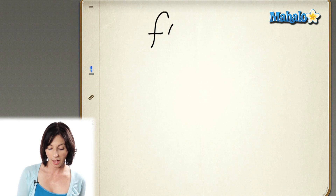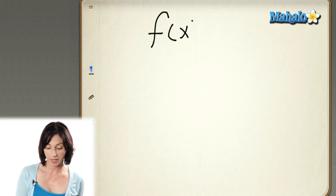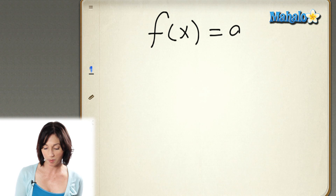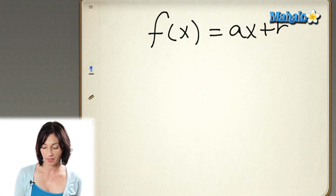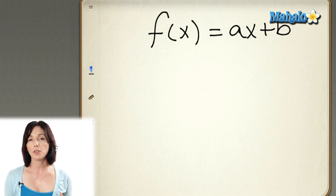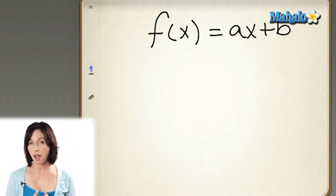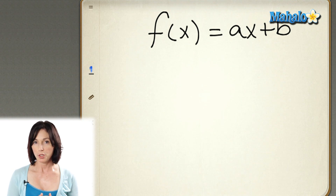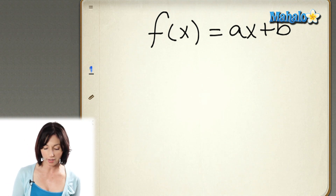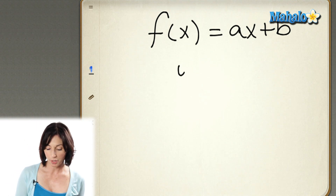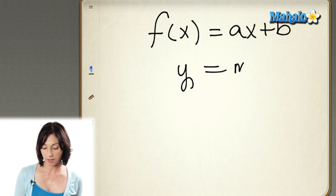f of x — that's red f of x — equals ax plus b. Now, if you're familiar with the equation of a line in slope-intercept form, you might recognize this as looking very similar to y equals mx plus b.